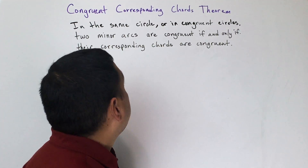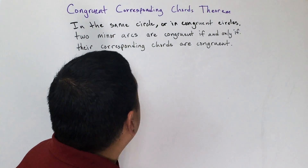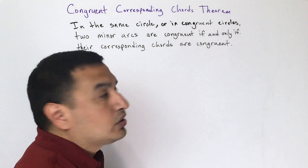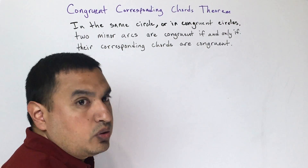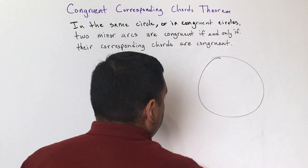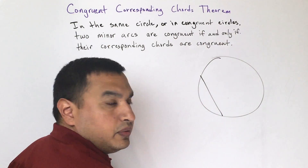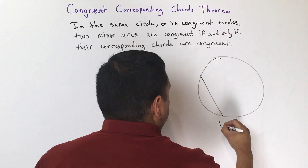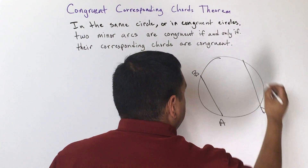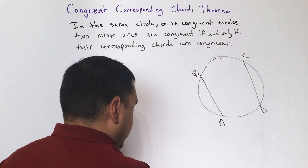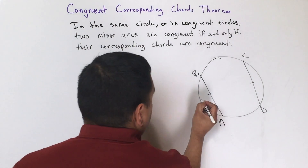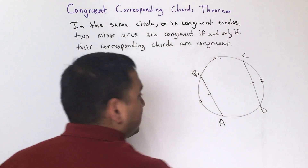This lesson deals with chords, starting with the Congruent Corresponding Chords Theorem, which says that in the same circle or congruent circles, two minor arcs are congruent if and only if the corresponding chords are congruent. For example, if chord AB is congruent to chord CD, then arc AB is congruent to arc CD.